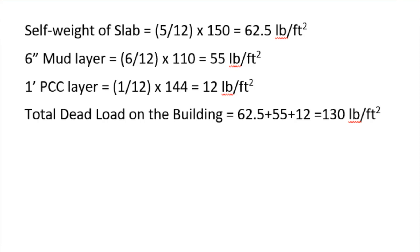Similarly, the dead load of the 6-inch mud layer is calculated as 6 divided by 12 to convert to feet, multiplied by the unit weight of mud, which is 110 pounds per cubic foot, giving 55 pounds per square foot. Then calculate the dead load of the 1-inch PCC layer as well. Adding all these dead loads together, the total dead load acting on this building is 130 pounds per square foot.